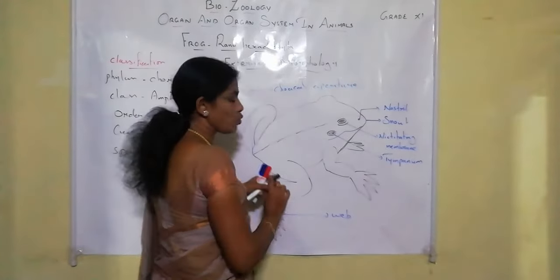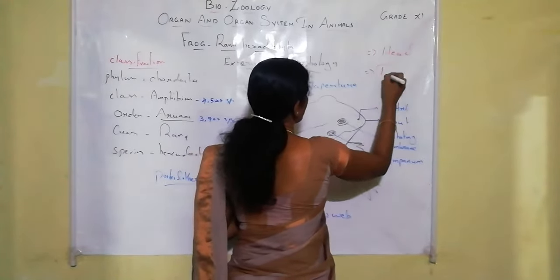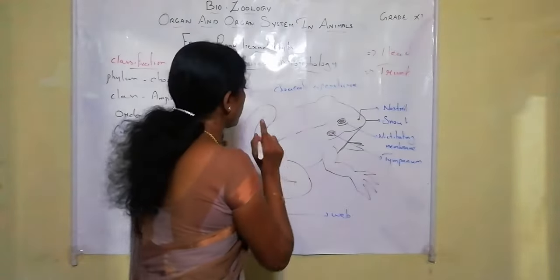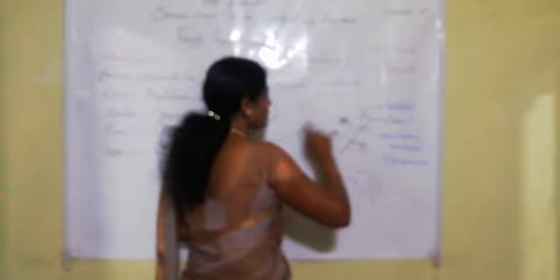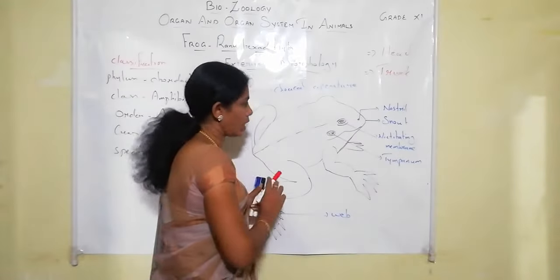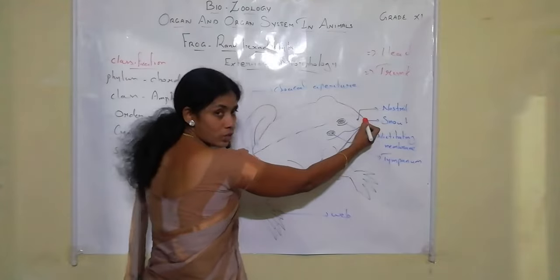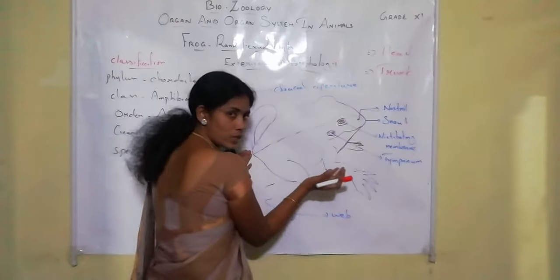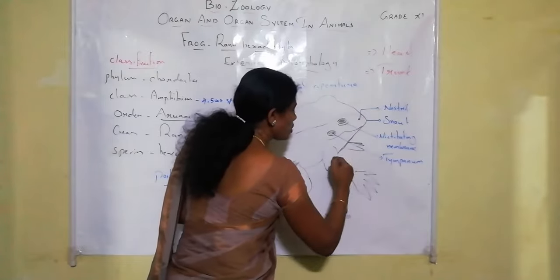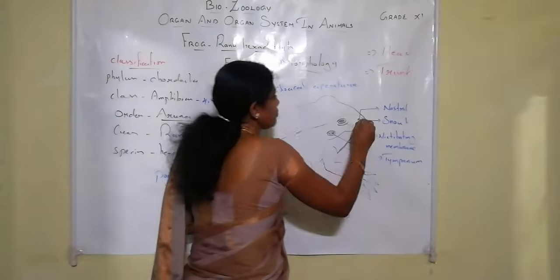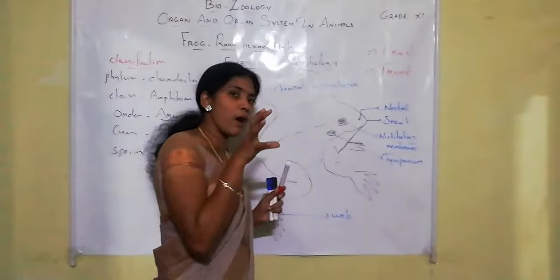The body is divided into two regions: the head region and the trunk region. The head is almost triangular in shape, with the anterior end forming a snout at the apex. This is the dorsal view. The anterior end consists of a wide mouth, and just posterior to the mouth there is a pair of external nostrils.